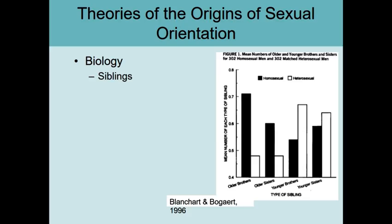It's really pronounced - among the black bars, the homosexual respondents, there are many more older siblings than younger siblings. On the left side, way more older brothers among the homosexuals than among the heterosexuals. Way more older sisters - twice as many for homosexuals as for heterosexuals. Then it flips when you look at younger siblings: more younger brothers among the heterosexuals, and slightly more younger sisters among the heterosexuals.